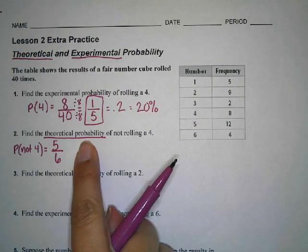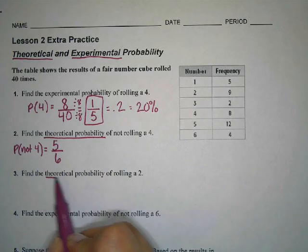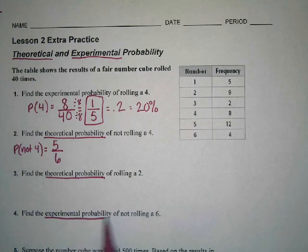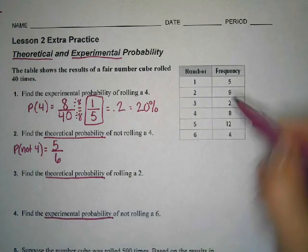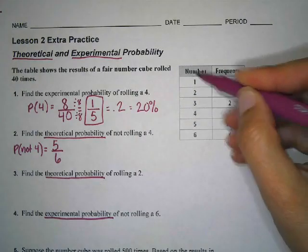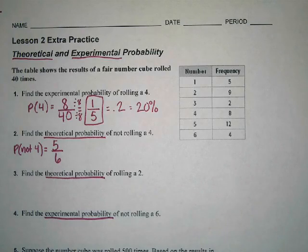Be careful when you're doing the rest of the homework. Number 3 says theoretical, number 4 says experimental. Experimental uses the frequencies given. Theoretical just uses the outcomes that could be. Continue working through those.